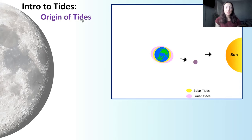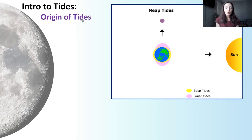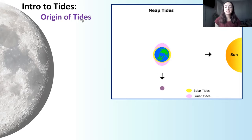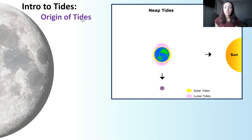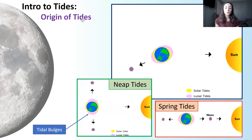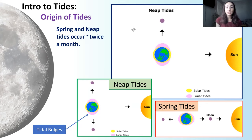Another thing we notice in this figure are the words at the top: neap and spring tides. Spring tides are when the earth, moon, and sun are all lined up, so their gravitational pulls are all in a line, and therefore the bulge effect on the tides is larger and exacerbated — this is when the tides are highest. The neap tide is when the moon and the sun line up with earth at a perpendicular angle, their effects cancel each other out, and tides are not as high. Spring and neap tides occur twice a month because the moon rotates around earth fully in about a month.